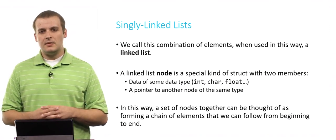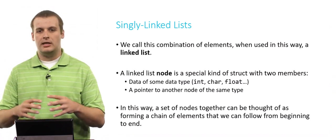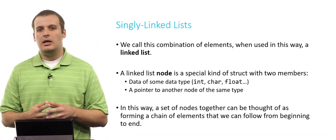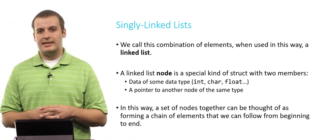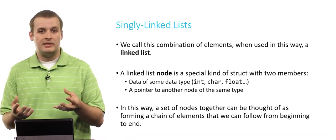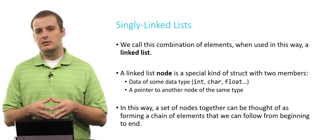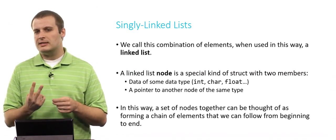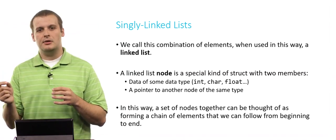A singly linked list is comprised of nodes. Node is just an abstract term - it's a kind of structure. This node has two members, or two fields. It has data - usually an integer, a character, a float, or some other data type defined with a typedef. And it contains a pointer to another node of the same type. So we have two things inside of each node: data, and a pointer to another node. You can think about it like a chain of nodes connected together.